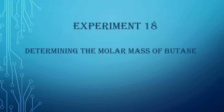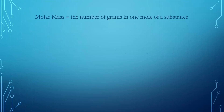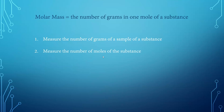In experiment 18, we're going to be determining the molar mass of butane. Molar mass is simply the number of grams in one mole of any substance. To determine the molar mass, we really just need to know two things: how many grams of a substance are in a particular sample, and how many moles of the substance there are. Then we can simply divide those two and we end up with grams per mole, or the molar mass.